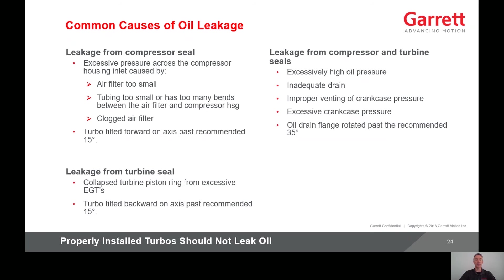Compressor seal leakage can also be caused by the turbo being tilted forward past the recommended 15 degrees. Leakage from the turbine seal is caused by a collapsed turbine-side piston ring, usually due to excessive exhaust gas temperature, or if the turbo is tilted backward past the recommended 15 degrees.